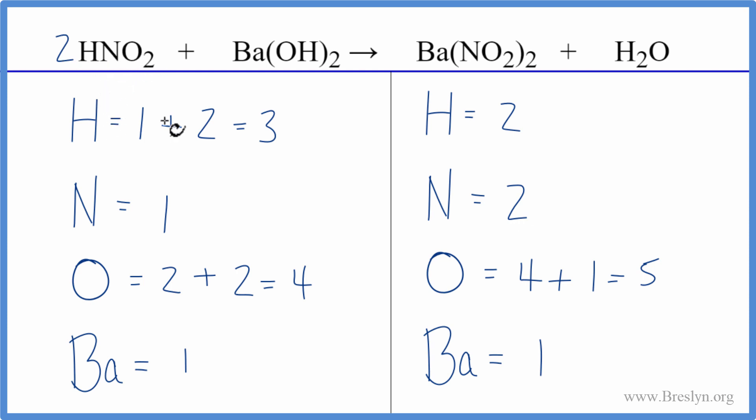So now, let's update our hydrogens, nitrogens, and oxygens. For hydrogen, we have one times two, that's two, plus two times the one, the two there. So we have four hydrogen atoms. One times two, that's two nitrogens, so we balance the nitrogens.